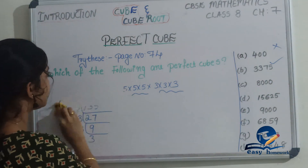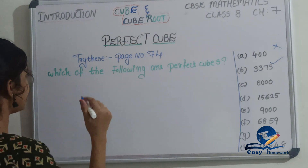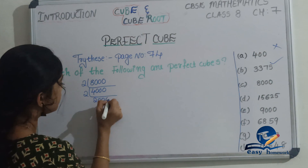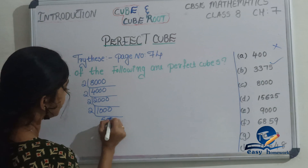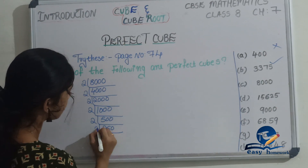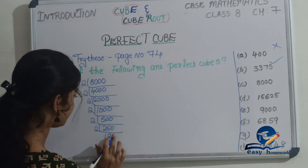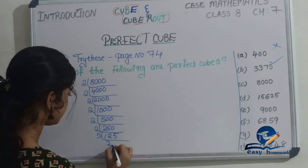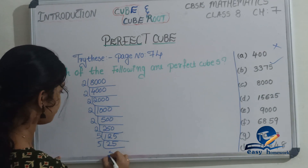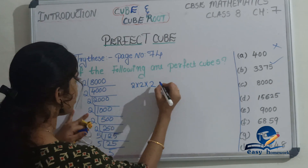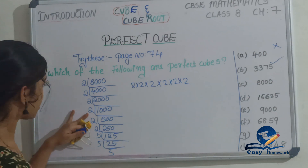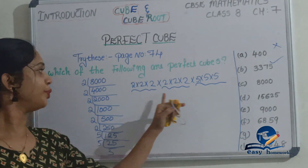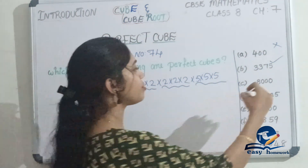Now we will discuss the next number: 8000. The prime factorization of 8000 gives factors of 2 and 5. Grouping them: 2 × 2 × 2 and 2 × 2 × 2 and 5 × 5 × 5 — all in complete triplets. So 8000 is a Perfect Cube.